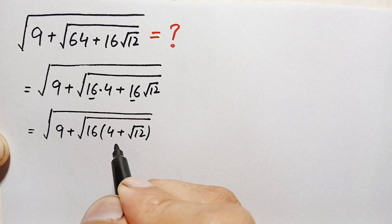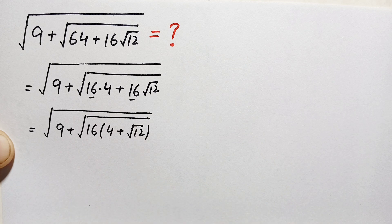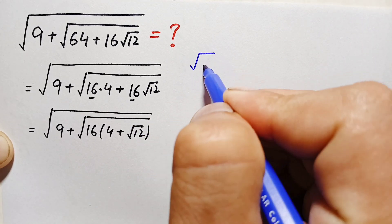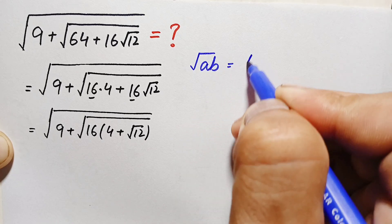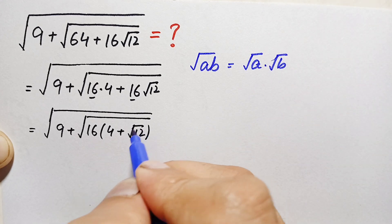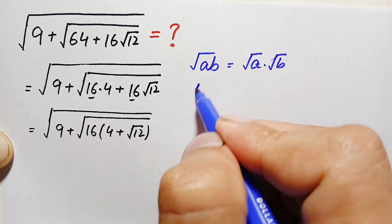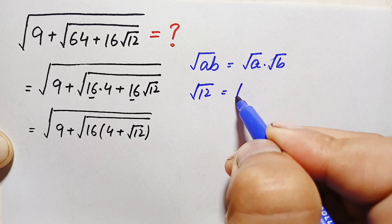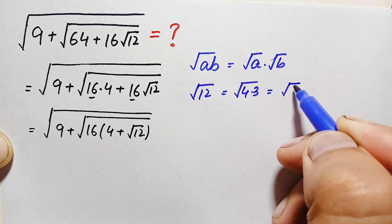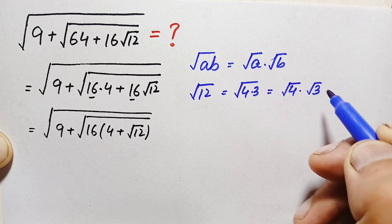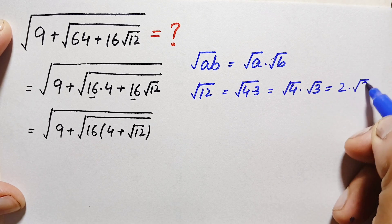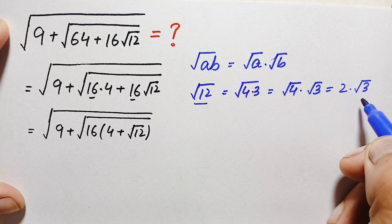Inside this group we will use the result that square root of a times b equals square root of a times square root of b. We can also write square root of 12 as square root of 4 times 3, which equals square root of 4 times square root of 3, and square root of 4 is simply 2. So the value of square root of 12 is 2 times square root of 3.